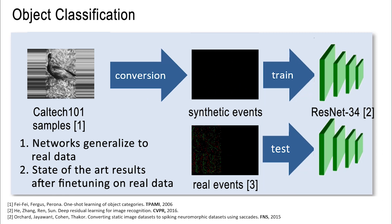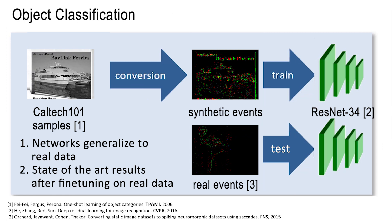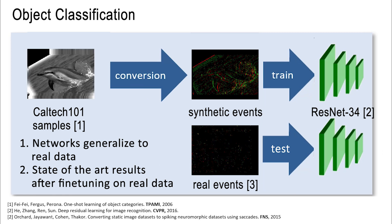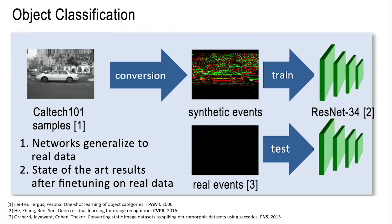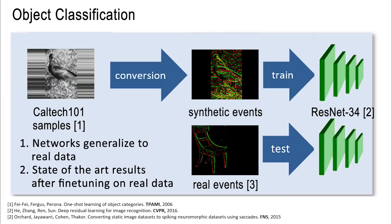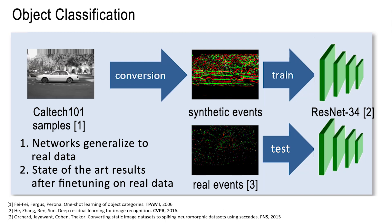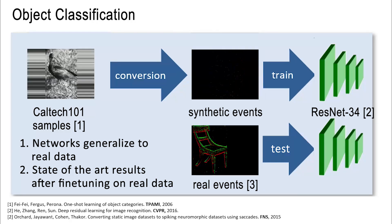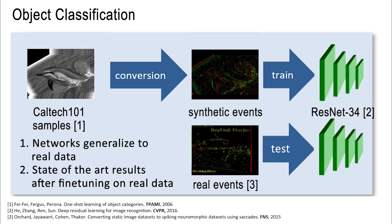We show that networks trained on these synthetic events generalize to real events. Moreover, state-of-the-art performance is achieved after fine-tuning our networks on real data.